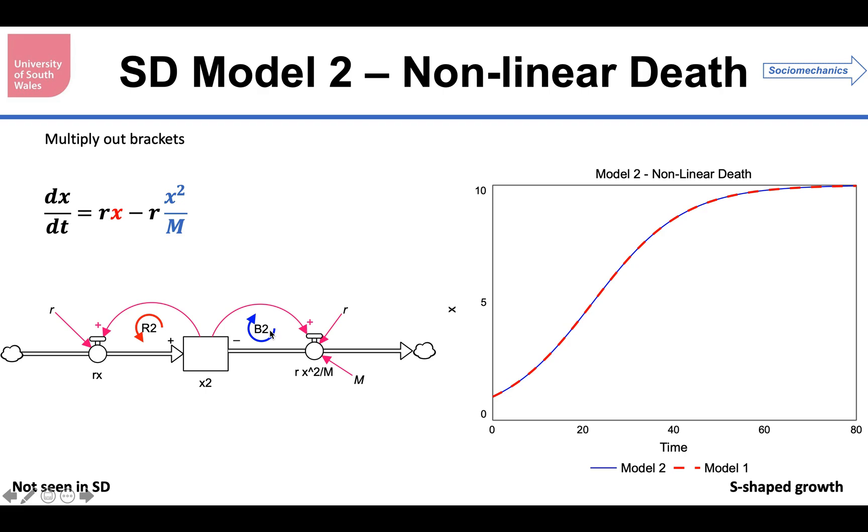This balancing loop gets stronger the larger that x gets. Now you would not normally see this type of model presented in system dynamics, since there doesn't seem to be any logical reason for this stock flow structure to exist. Nevertheless, it represents the same differential equation. And not surprisingly, it's got exactly the same behavior in terms of x.